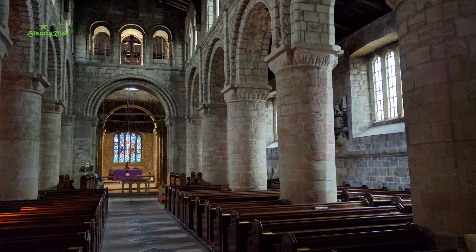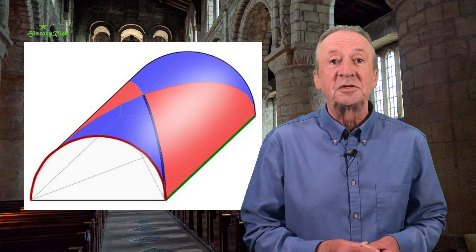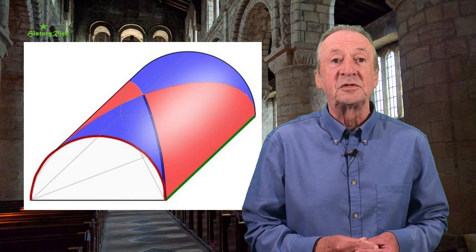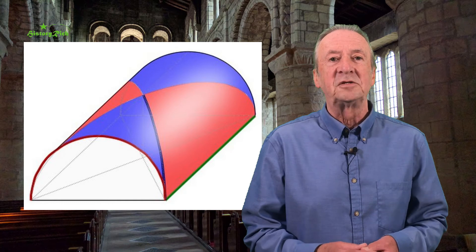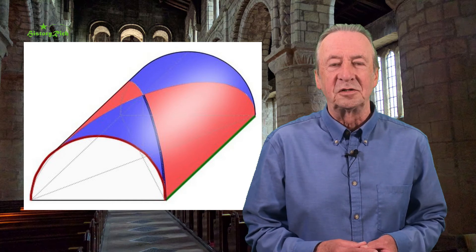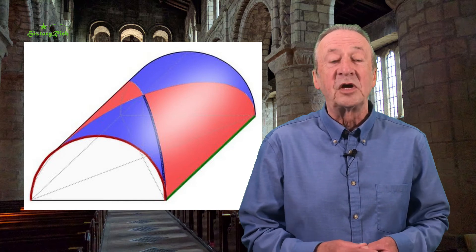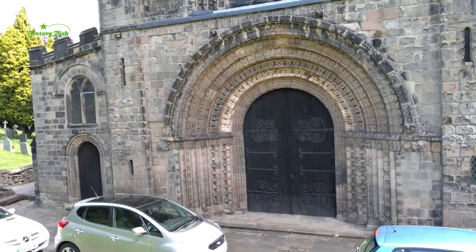Circular piers with scallop or water leaf capitals, simple semi-circular barrel or tunnel vaults, essentially made up of an extended arch, and decorations such as chevrons and lozenges, beak heads and billets. We looked at these ornaments in part 19 of our series Exploring Paris Churches.